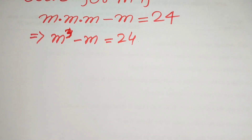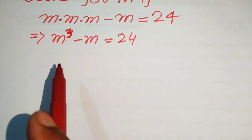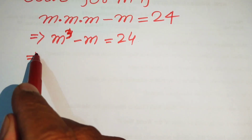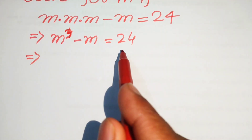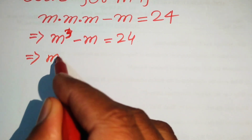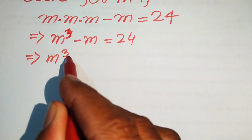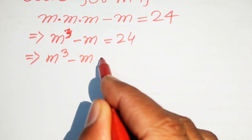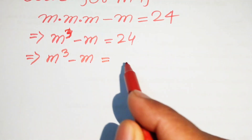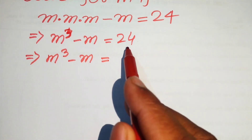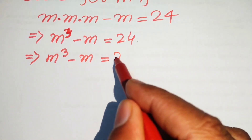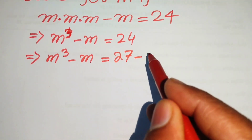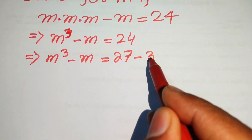Now in the next step, we focus on the right hand side. This is 24, and we write it as m cubed minus m equals to 27 minus 3.